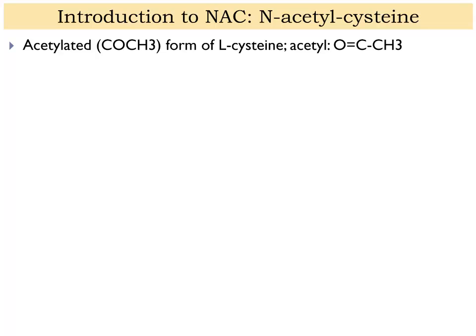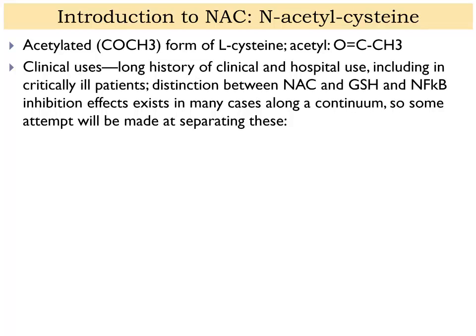L-cysteine is a non-essential amino acid, sometimes also described as conditionally essential because sometimes people make enough, but if they're under stress or exposed to toxins they might need to supplement. We can distinguish between the effects of NAC, glutathione, and NF-κB inhibition, even though some overlap exists — because NAC has benefits of its own, some derived from its conversion to glutathione and some from its ability to inhibit NF-κB.